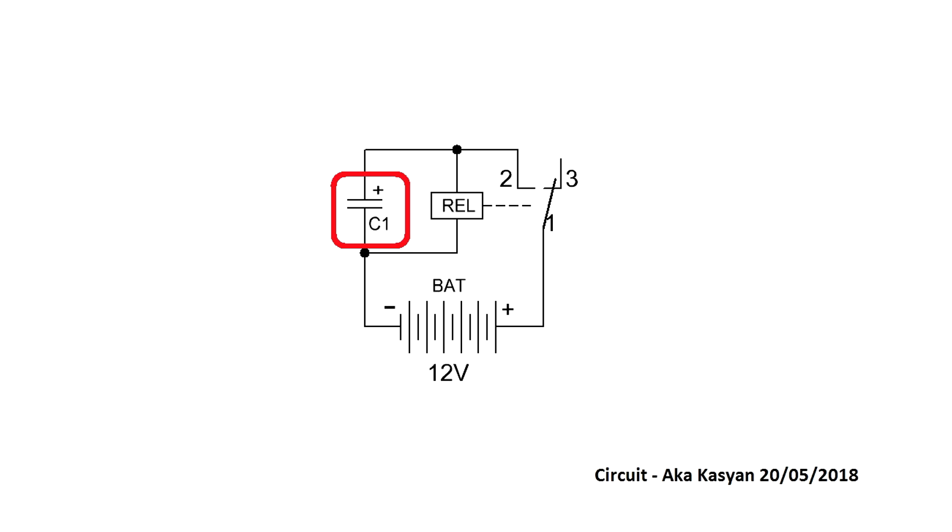But by this time, enough energy has accumulated in the capacitor and the coil is powered by the energy stored in the capacitor. As long as the voltage on the capacitor is sufficient to power the relay coil, the contacts will be in this state.